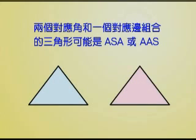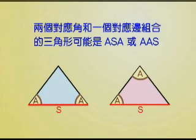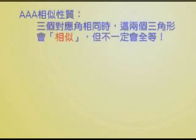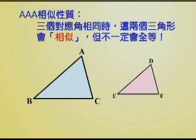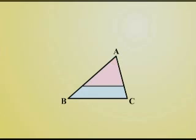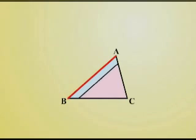两个角和一个边有两种组合，可以是ASA或是AAS，但是ASA和AAS是不一样的组合哦。我们先来看看，当两个三角形的三个对应角相同的时候，这两个三角形并不一定是全等的关系。大家看看画面上的两个三角形，它们三个对应角都相等，可是一个比较大，一个比较小，我们只能把它们称作是相似的关系。那如果我们把小的三角形放大，到其中某一个边长和大三角形相同时，那么这两个三角形就会变得全等咯。